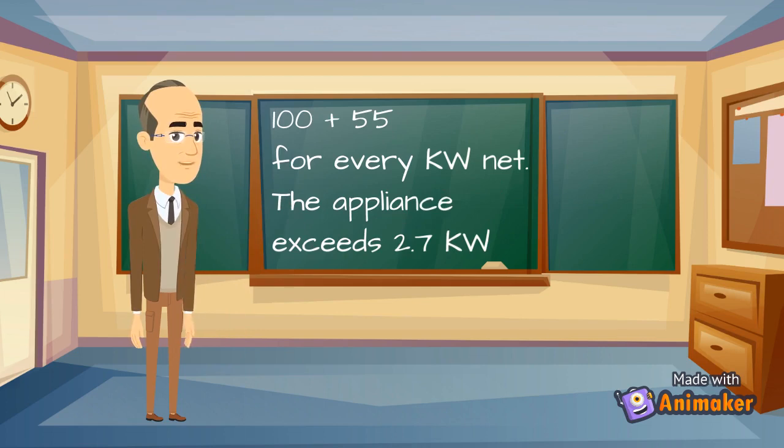We now need to calculate the vent to suit the appliance. First, let's take a look at the formula. No matter what the kilowatt input is for a flueless space heater in a room, we start with 100 centimeters squared of permanent vent size.